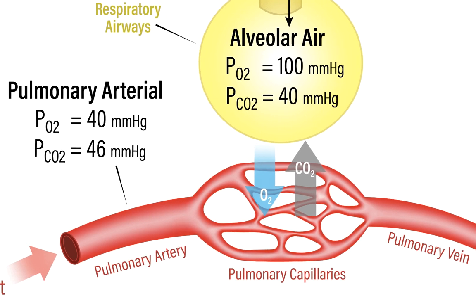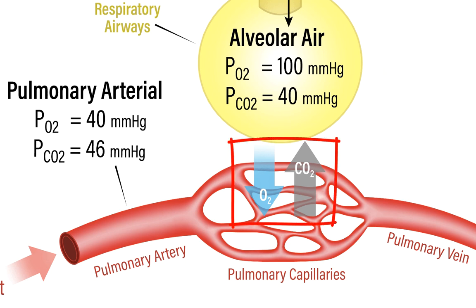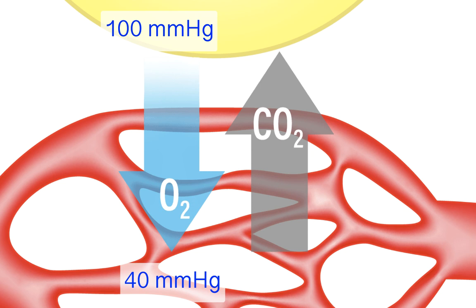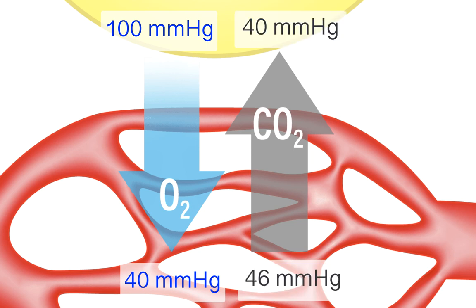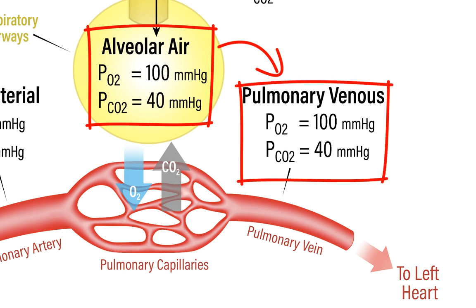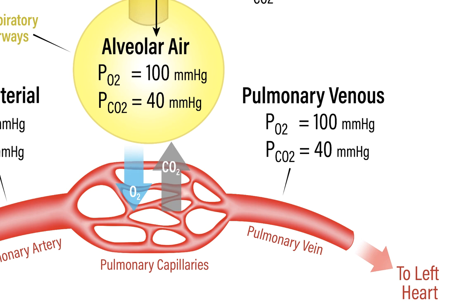Once this pulmonary arterial blood reaches the pulmonary capillaries, two partial pressure gradients facilitate gas exchange between the alveolar air and the pulmonary capillaries. An oxygen partial pressure gradient favors the movement of oxygen from the alveolar air into the pulmonary capillaries, and a carbon dioxide partial pressure gradient favors the unloading of carbon dioxide into the alveolar air. By the time blood leaves the pulmonary capillaries and enters the venous side of the pulmonary circulation on its way back to the left heart, full equilibration has typically occurred. The pulmonary venous blood has a PO2 of 100 millimeters of mercury and a PCO2 of 40 millimeters of mercury, matching the gas composition of the alveolar air.